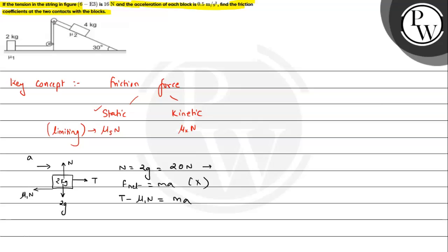If we talk about tension, 16 N given, minus μ1 into 20, equals to 2 into 0.5 which is 1. So μ1 value is 15 by 20, that is 3 by 4, and this is 0.75. So this is the first part of the answer, μ1.